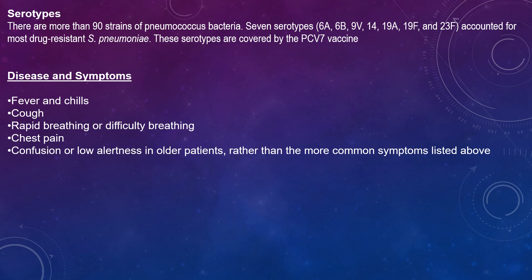Symptoms of pneumococcal pneumonia include fever, chills, cough, rapid breathing or difficulty breathing, chest pain, confusion, or altered alertness in older patients rather than the typical symptoms seen in younger patients.